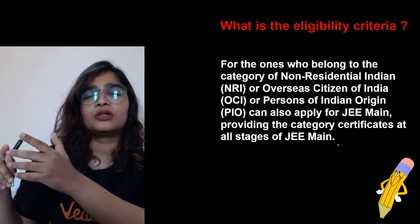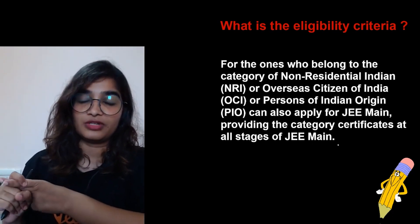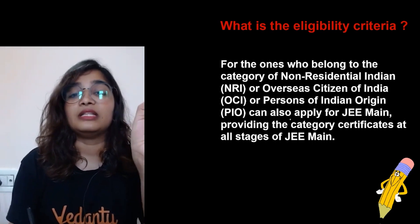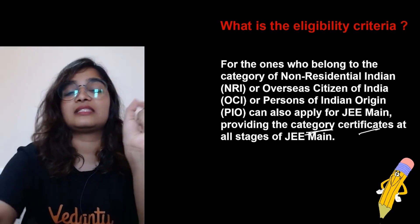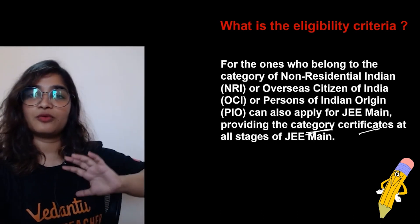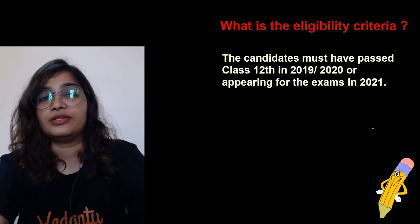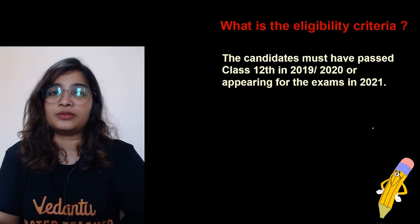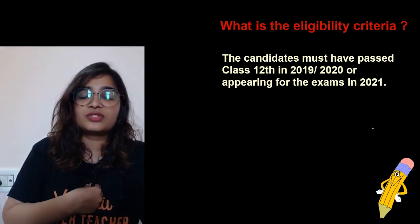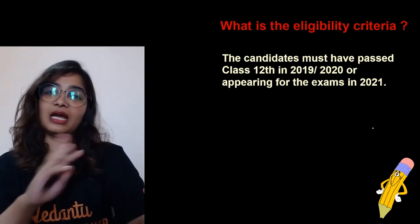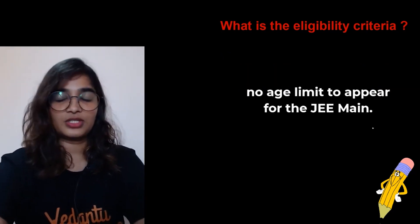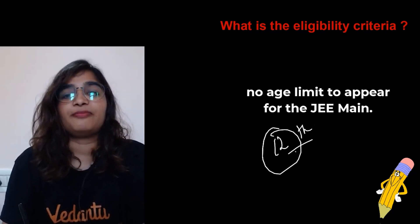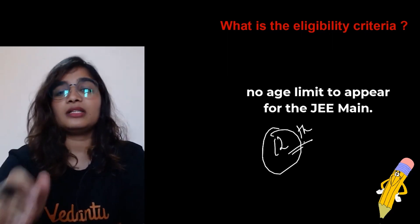For those who belong to the NRI category, Overseas Citizen of India (OCI), or Persons of Indian Origin, they can also apply for JEE Main, but they should provide the category certificates at all stages of JEE Main. For example, if I want to write JEE in 2021, then I must have passed Class 12 in 2019 or 2020. There is no age limit to appear for JEE — the minimum requirement is just that you must have passed Class 12.